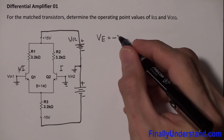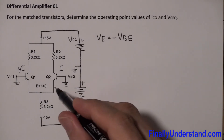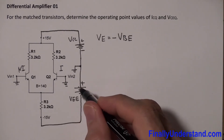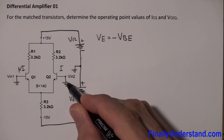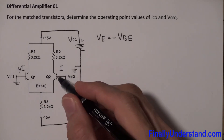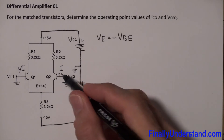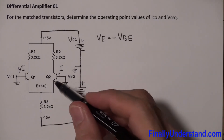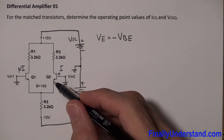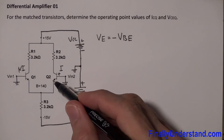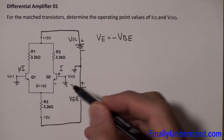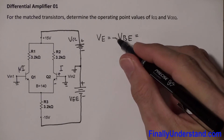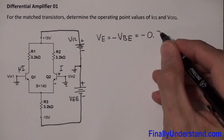So I write that VE is equal to negative VBE. Why negative? The current goes from VEE to ground, and from ground to the base of each transistor. Anytime current enters a component I label it positive, and anytime it leaves, negative. Using KVL, the voltage at the emitter is negative VBE. Assuming VBE = 0.7V, we get VE = −0.7 volts.